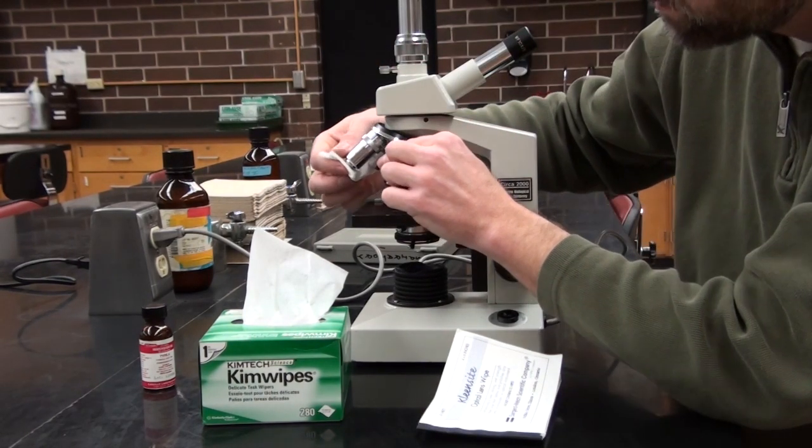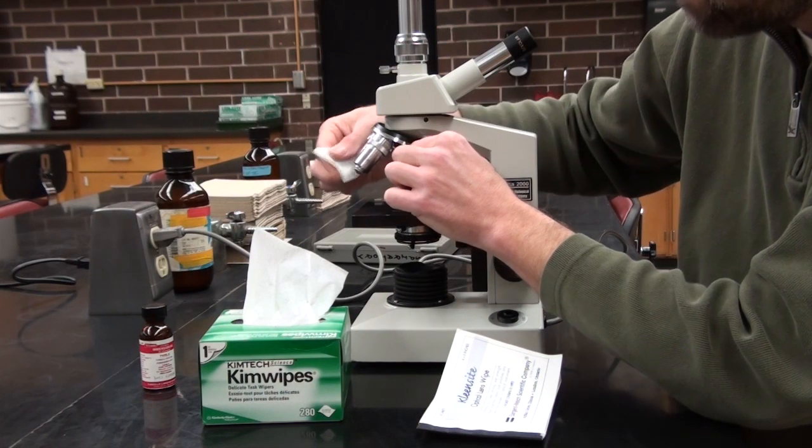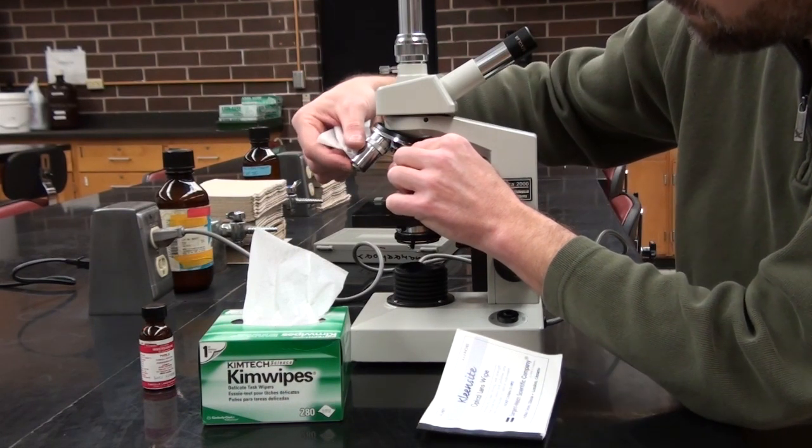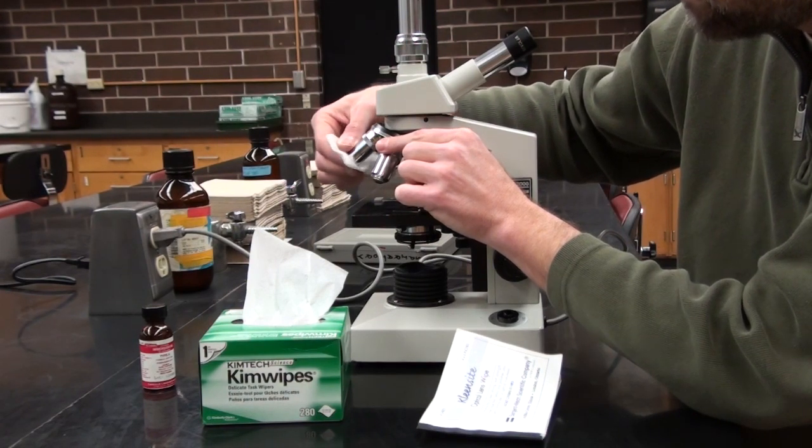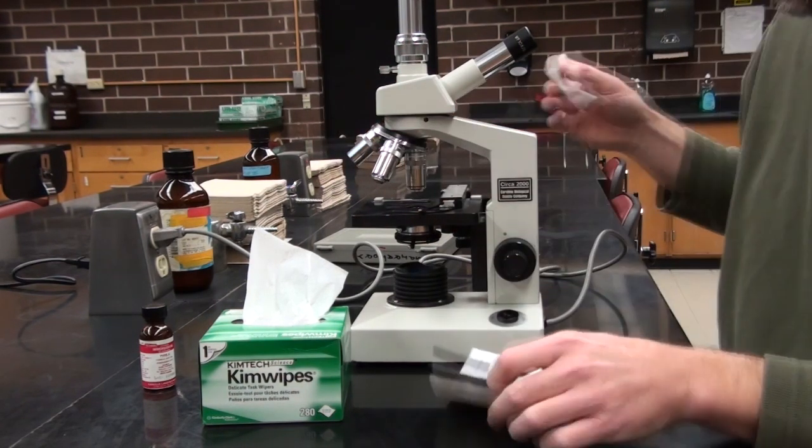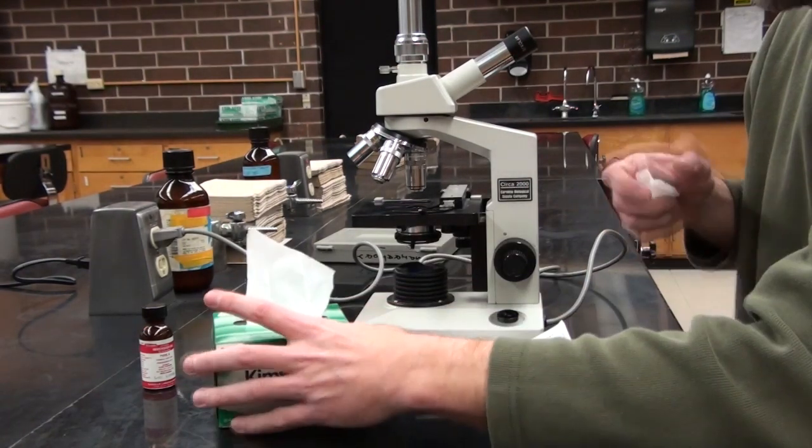Under here for the objectives, you'll just want to gently wipe. Sometimes these do get dirty. Notice in some of these this does push down, so just be aware of that. But a lot of times the objective lenses can get dirty and you can clean them, but you will always use the optical lens wipe. Never use the chem wipe.